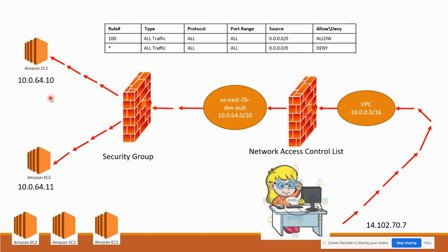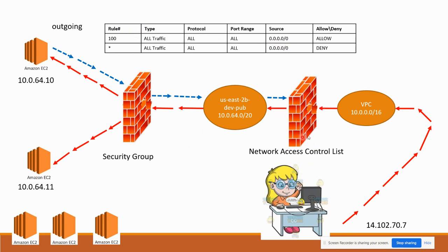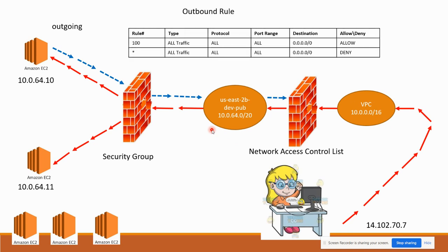Once this user is connected to a virtual machine and that machine responds to the user, this response is known as outgoing traffic. The direction goes from the subnet outward, and at that point network access control list comes into the picture again. NACL monitors both incoming and outgoing traffic. If outgoing is allowed, it will let the user receive the response. If you have created a deny rule for outgoing, NACL will not let the system respond to the user.